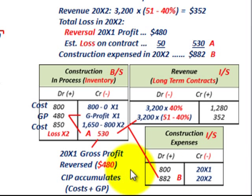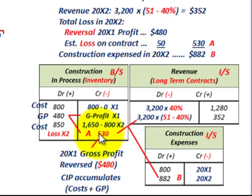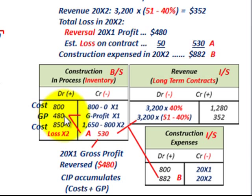When you have losses on long-term contracts, you must recognize the loss as soon as it's estimatable — even without concrete numbers. If cost to date plus estimated costs to complete exceed the contract price, you immediately recognize the loss. This is done by reducing the construction-in-process inventory account, which includes the current loss plus backing out any previously recognized gross profit since the contract is now unprofitable.